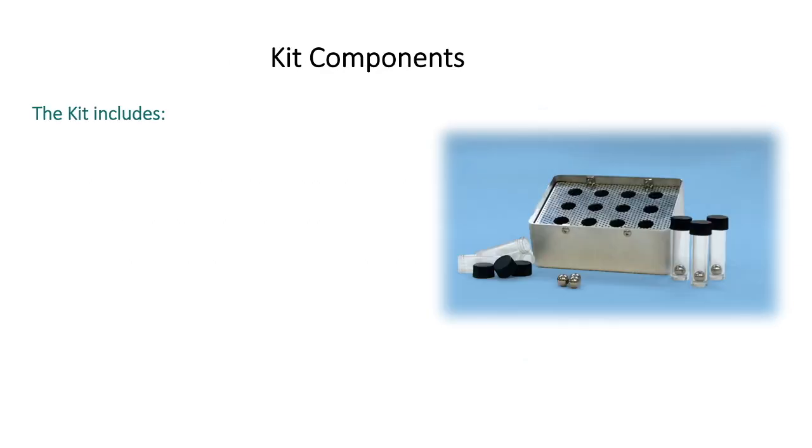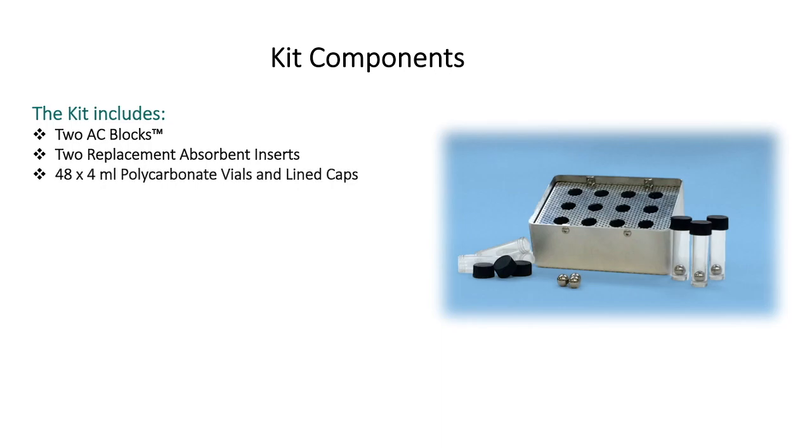Each AC block kit includes two AC blocks, two replacement absorbent inserts, 48 4 mil polycarbonate vials, and 48 3 eighths stainless steel grinding balls.